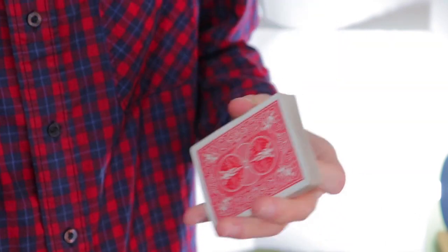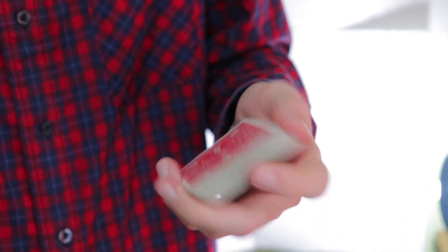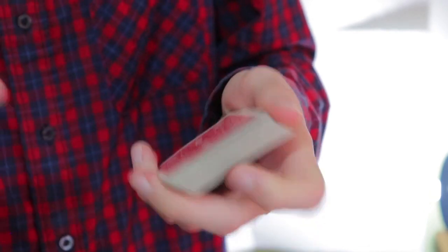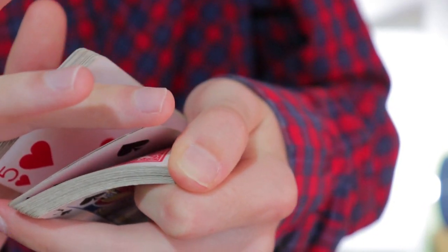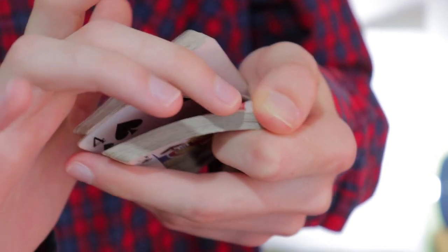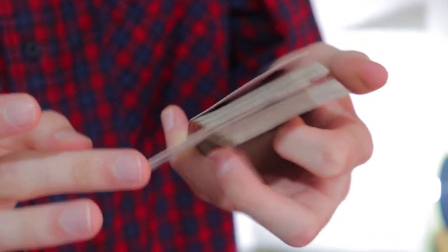Моя задача вас научить делать такой двойной подъем. Потому что, в принципе, он сразу уже встроенный, сразу интегрированный фокус. То есть, кода карт перемешалась, зритель нам говорит где-нибудь стоп. Допустим, вот скажите стоп. Здесь. Засовываем средний палец, отсчитываем большим пальцем: один, два.